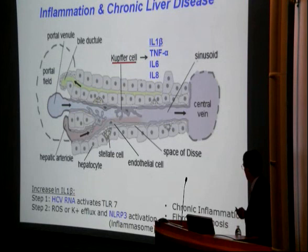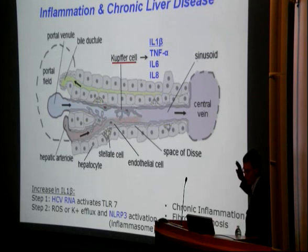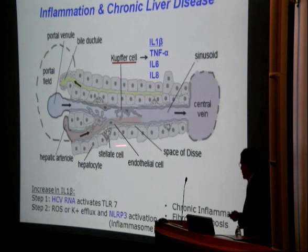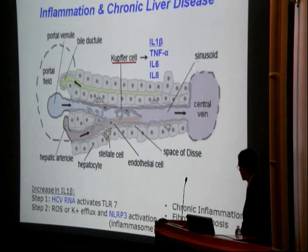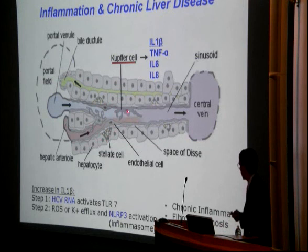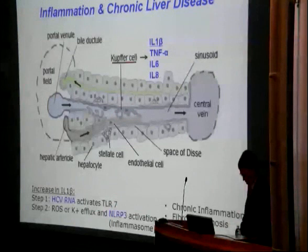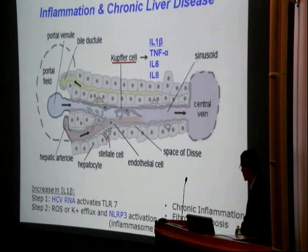In conclusion on the hepatitis C work: Kupfer cells are major players in driving chronic HCV infection. We think stellate cells aren't the major source of driving inflammation — they may be targets of the cytokines released by Kupfer cells. One question that remains is whether the inflammasome can actually be a target for antifibrotics.